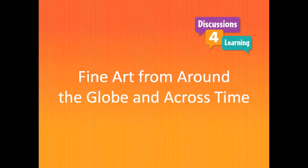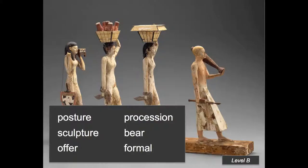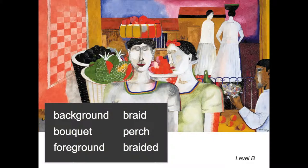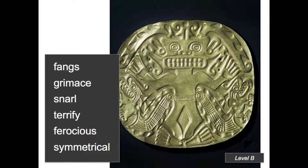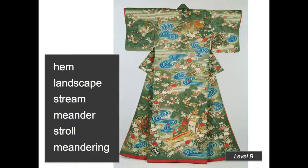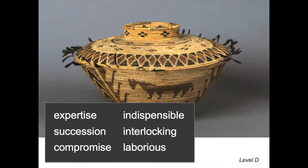The fine art includes artworks from around the globe and across time, including Ancient Egypt — what a great way to remember the words formal procession. This Mexican artist. This chest plaque from ancient Panama, great for using the words fangs, grimace, snarl, terrify, ferocious, and symmetrical. This Japanese kimono that includes a meandering river. And there are artworks from Native American artists from across North, Central, and South America.